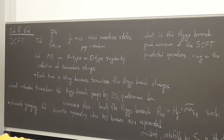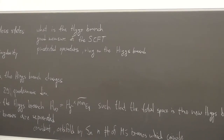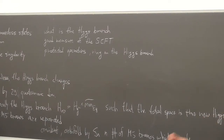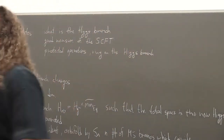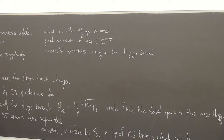When the M5 branes are coincident rather than separated, the Higgs branch becomes a different Higgs branch — it's the orbifold by the discrete group S_N, where N is the number of coincident M5 branes. This is not trivial: if you look at the spectrum of chiral operators, the spectrum changes. It is restricted to the invariant subsector under the S_N symmetry. So the low energy degrees of freedom are different, and this happens together with the phenomenon of tensionless strings.